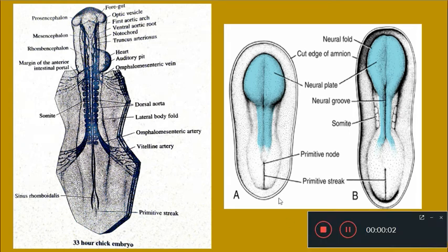Dear students, in an earlier video we discussed the salient features of the 24-hour chick embryo. Now we will see what changes it has attained and what are the salient features we can observe at 33 hours of development.